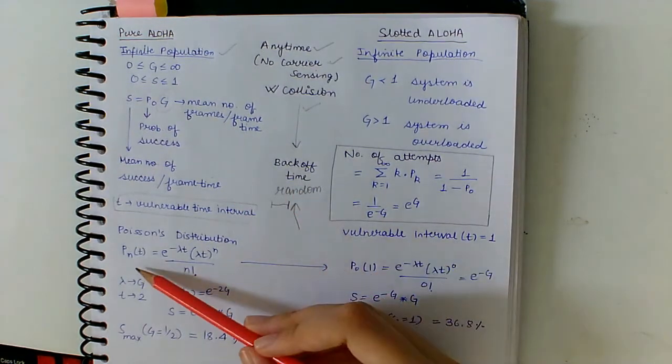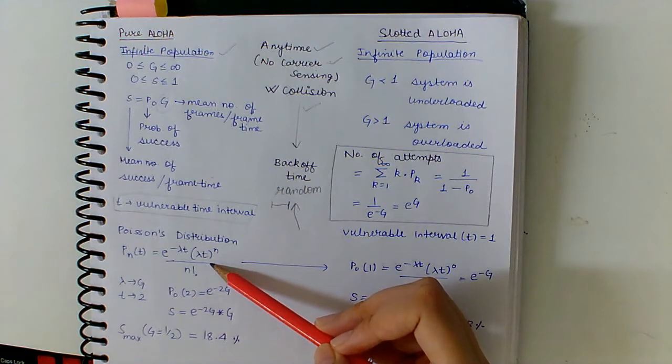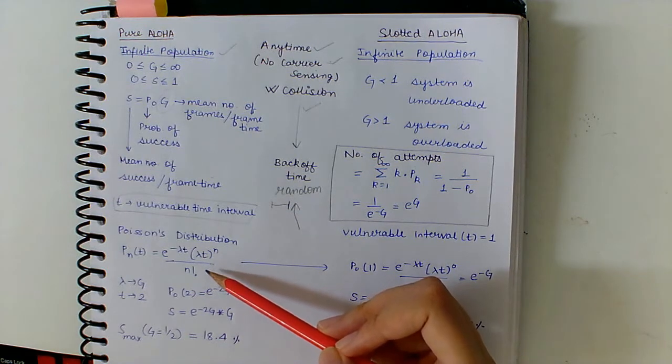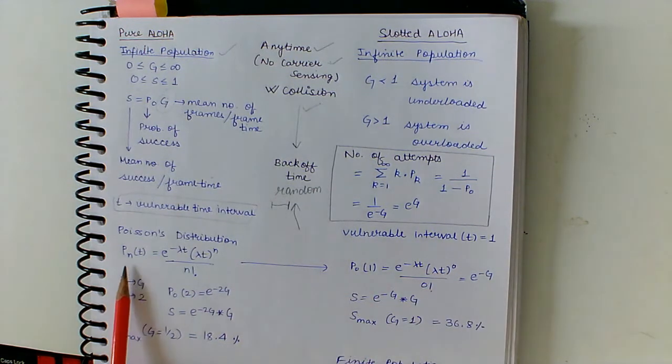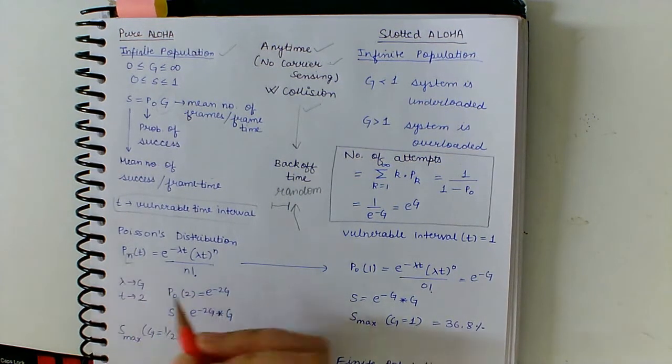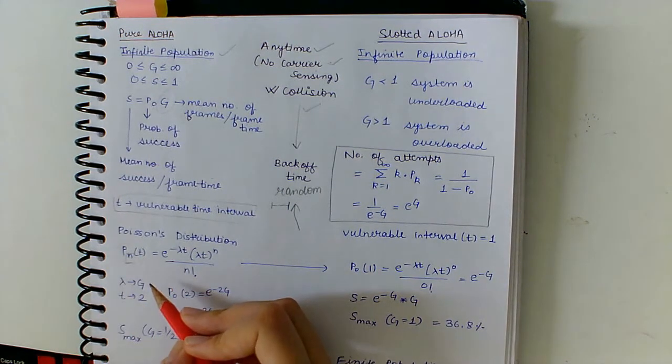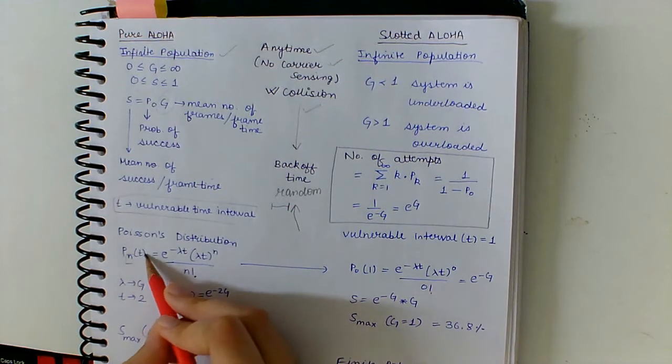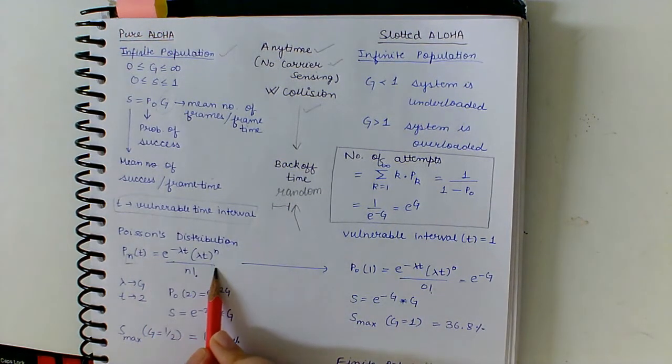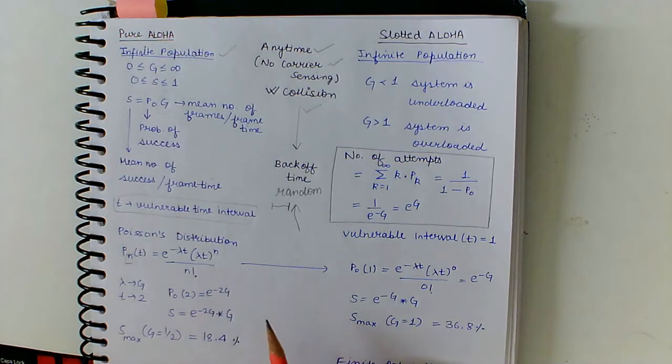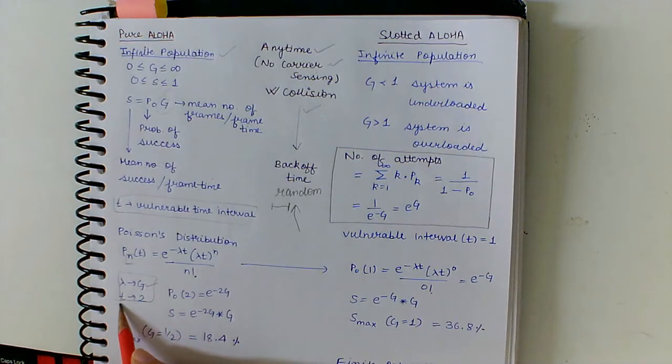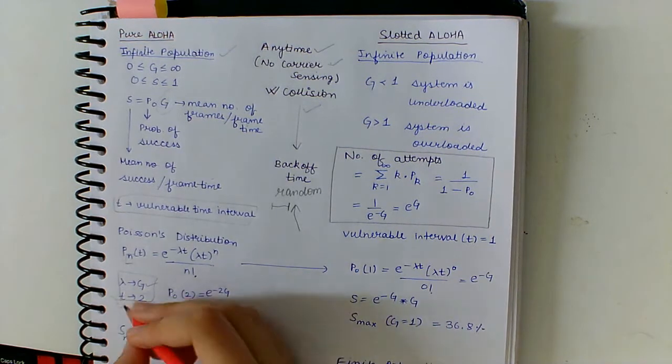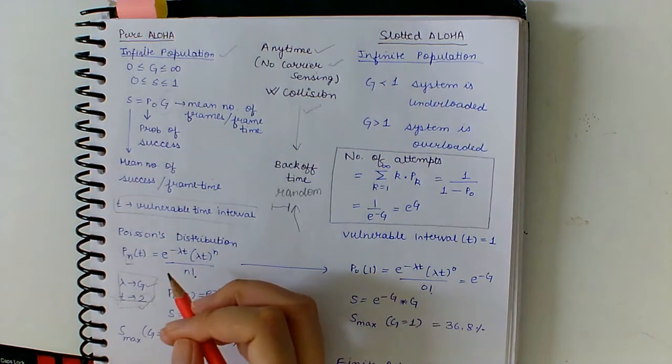As it is an infinite channel, for example, Poisson's distribution can very well capture the essence of this problem. So PN(T) is the probability that N stations occur in time T, and this is the Poisson's formula. We know that the mean is G.